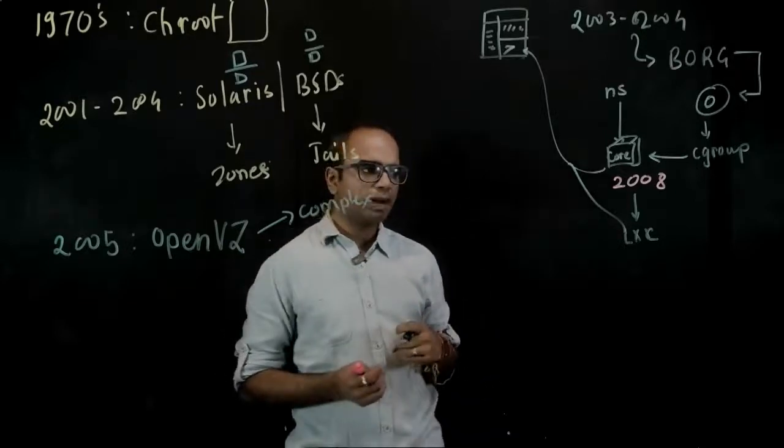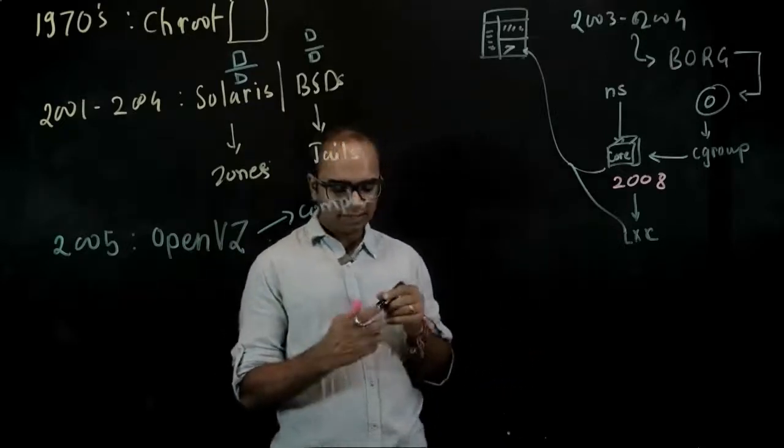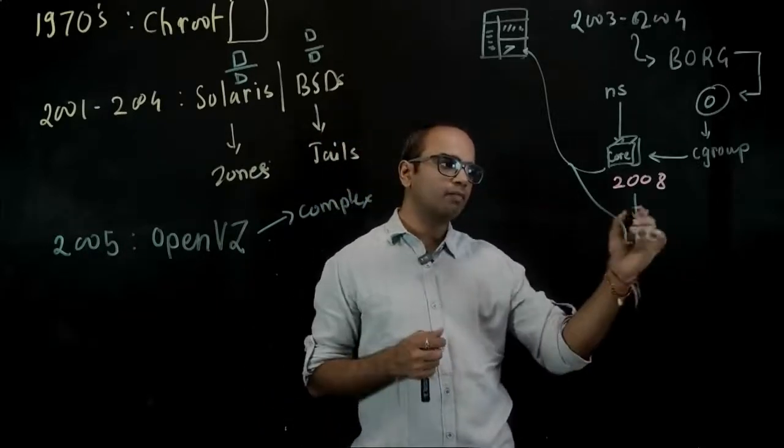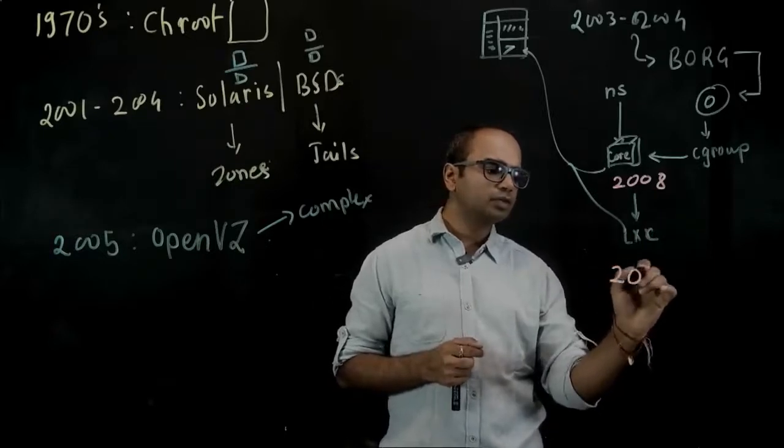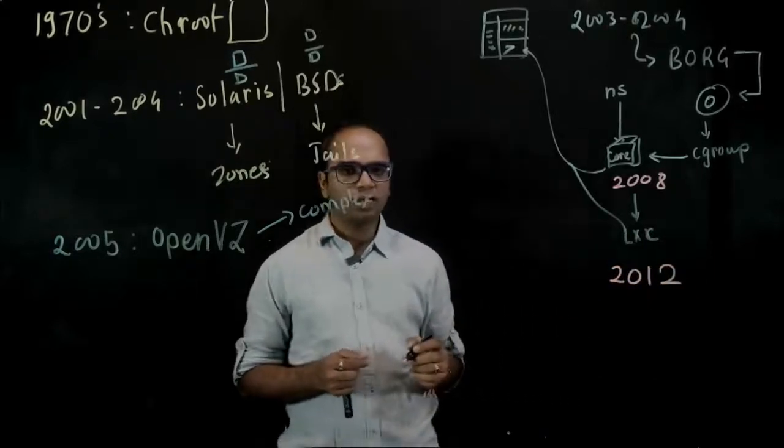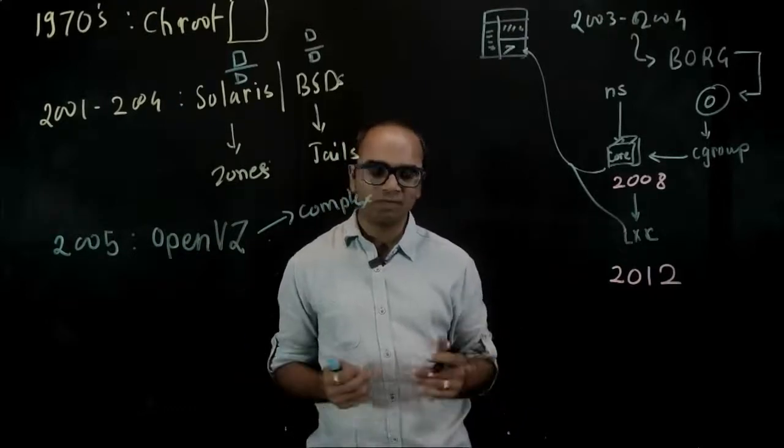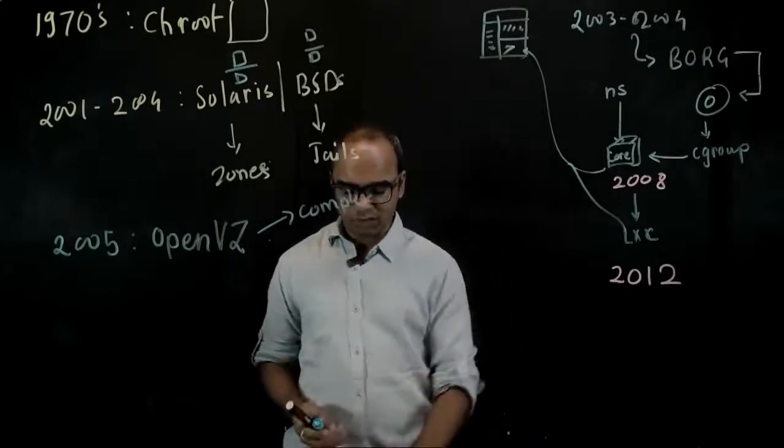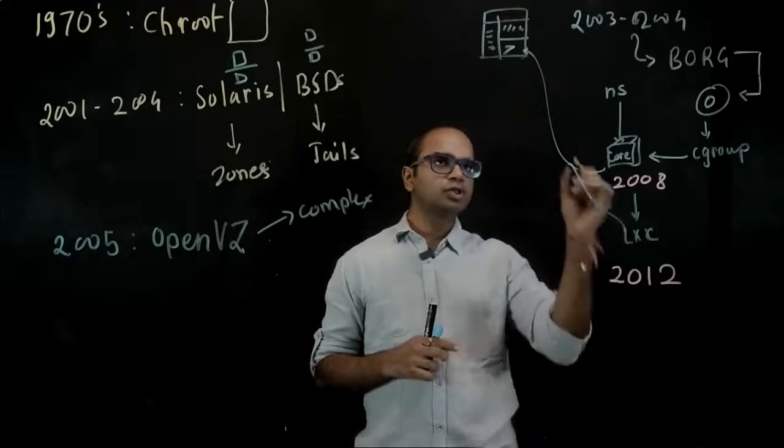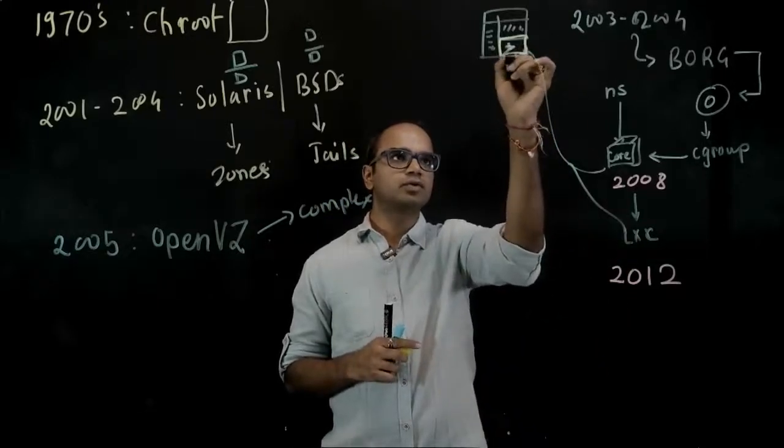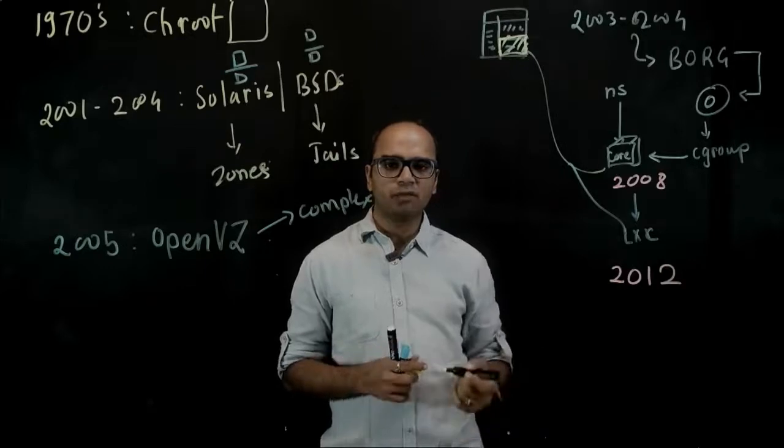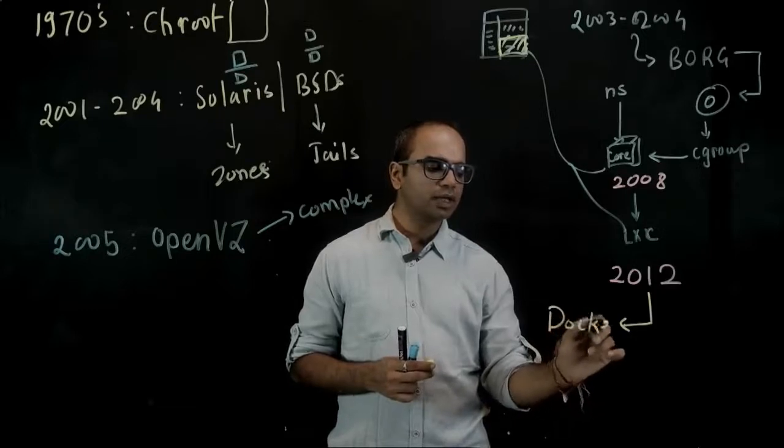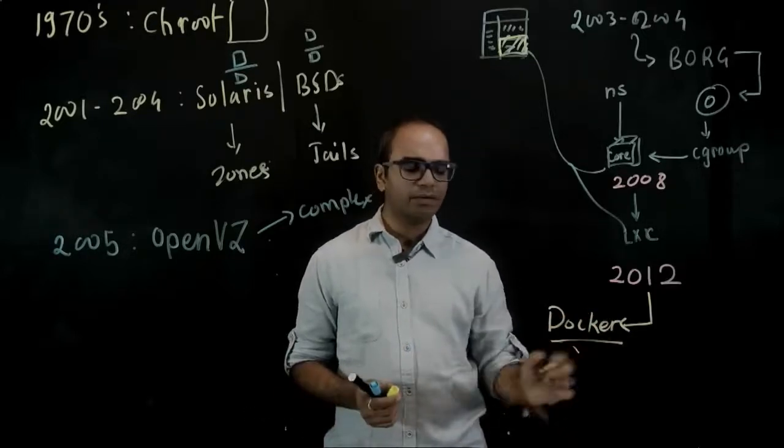DotCloud had raised funding, and by around 2012 this product probably did not fly. It was not making a lot of money for them, so by the end of 2012 they were almost running out of funds, on the border of bankruptcy. That's when the founder of dotCloud brought his team together and what they decided to do was open source the technology that they were using to run this terminal, which was based on top of LXC. They named it Docker, and rest is the history.